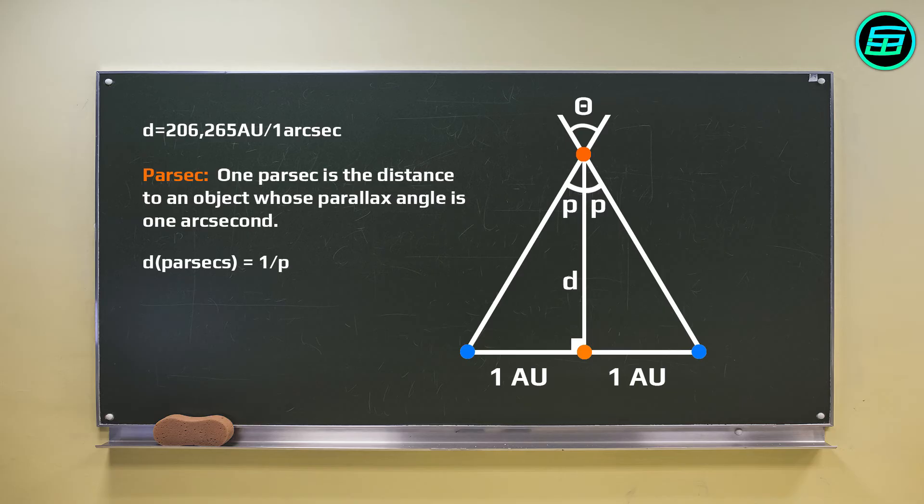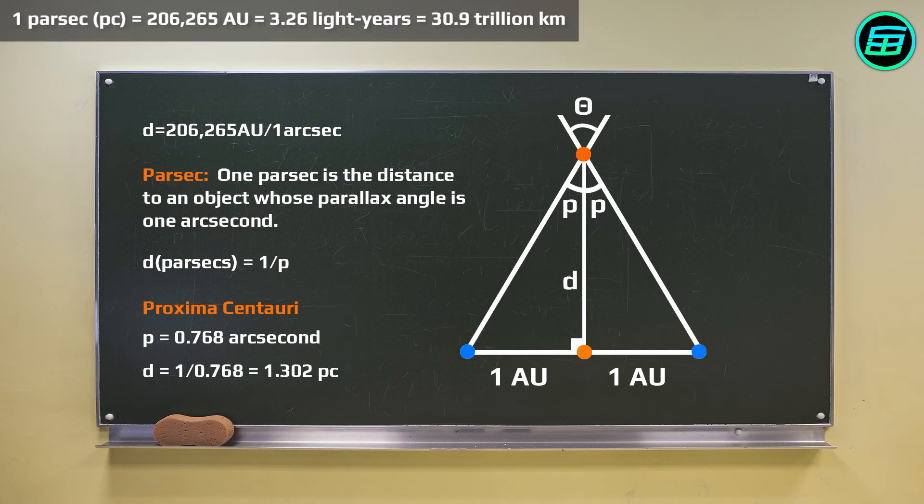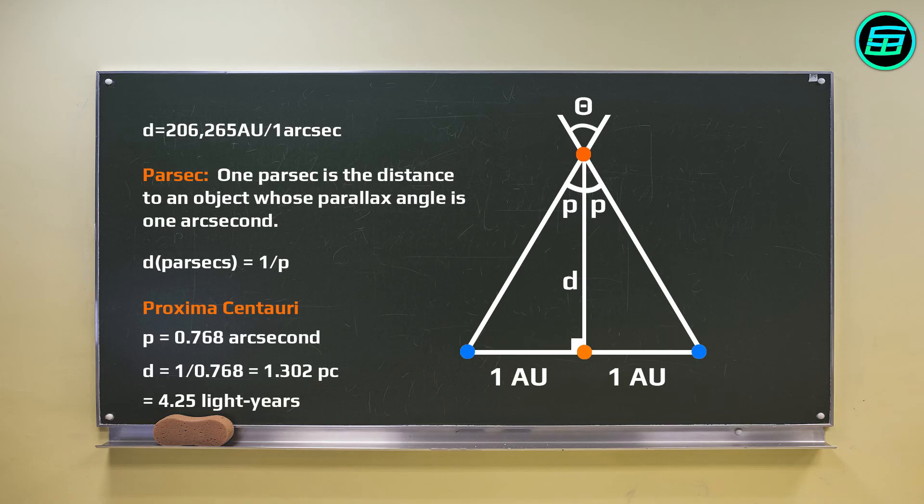For example, the parallax angle of Proxima Centauri is 0.768 arc second. So the distance of Proxima is 1 over 0.768, which is equal to 1.302 parsecs. Since one parsec equals 3.26 light-years, the distance of Proxima Centauri can also be given as 4.25 light-years.